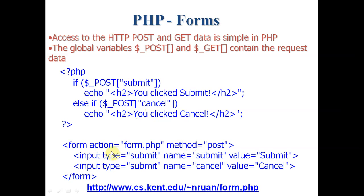You can see here this is the client-side program, and the other program is the server-side program. On the client side, we start the program with a form: action is form1.php, method equals POST, and input type submit. We have two buttons — the first button is Submit and the second button is Cancel. The name of the first submit button is 'submit' and the name of the second is 'cancel', with captions Submit and Cancel respectively.